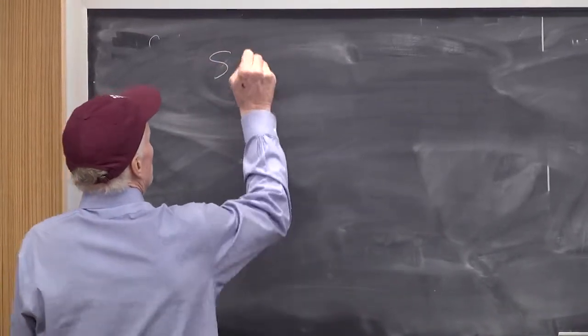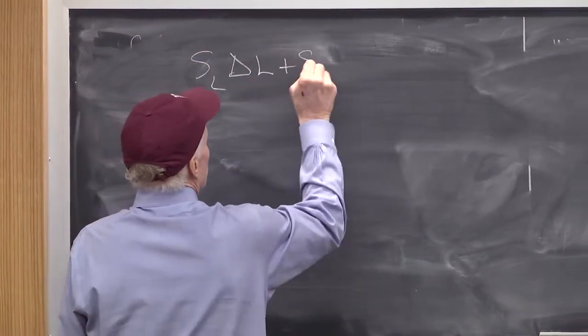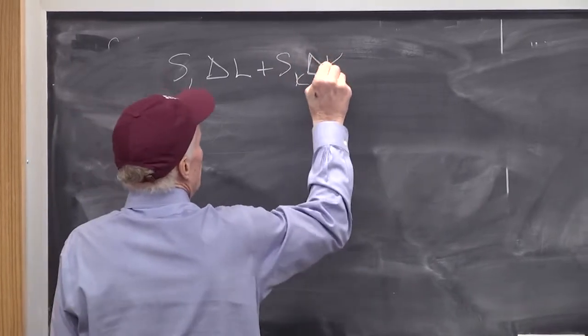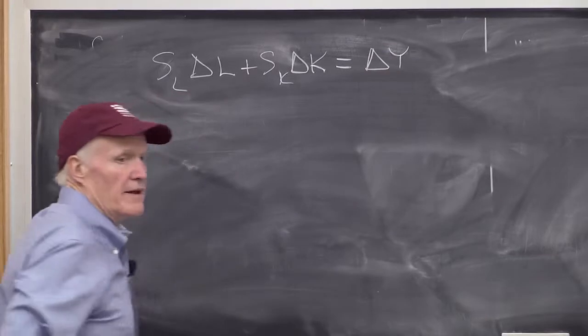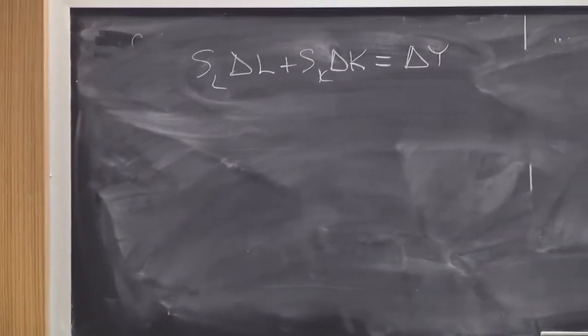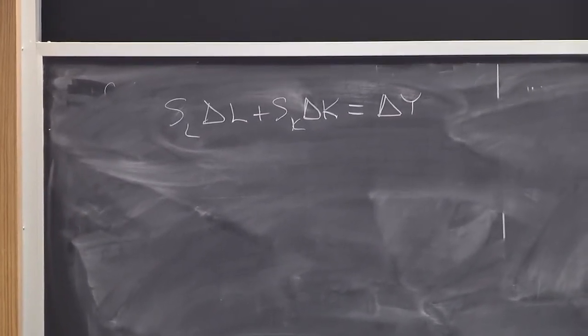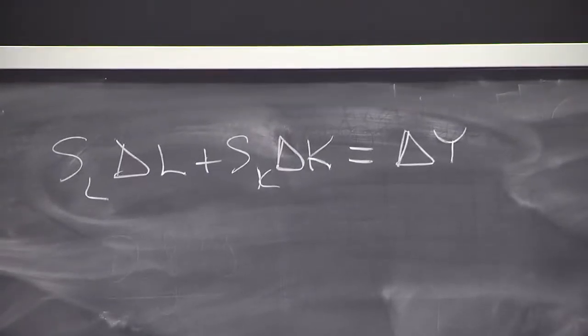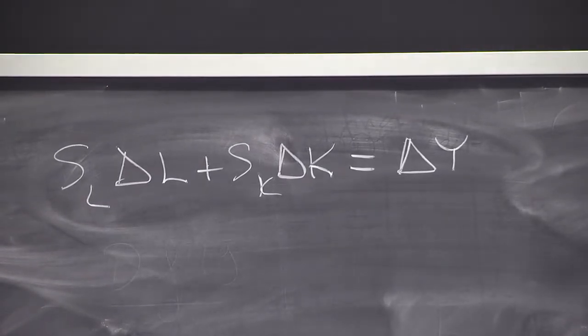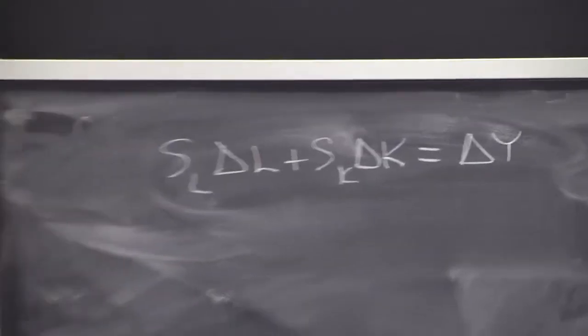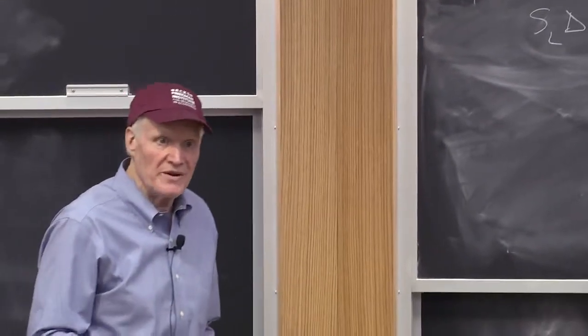Which is SL delta L plus SK delta K equals delta Y. Again, you can think about that as like a first order approximation to the production function. There's nothing in that approximation that says that these shares are constant, that they don't vary with output. You don't need that.